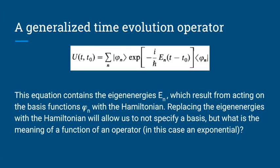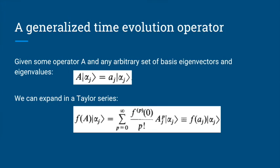The strategy we're going to take is: we have these eigenenergies and eigenfunctions, and if we can express them in terms of the Hamiltonian instead, that's the strategy we want to use. But then you'd have the exponential of a Hamiltonian — a function of an operator. That's not trivial to write down; we have to define what a function of an operator means.